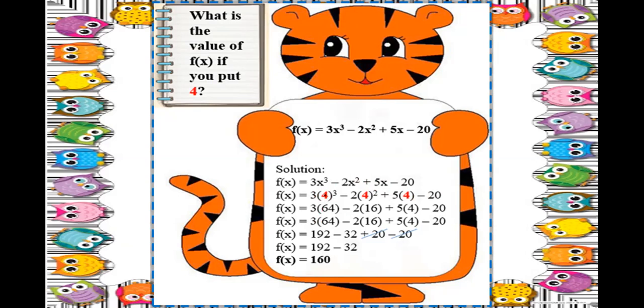You have to raise 4 to the 3rd power first: 4 times 4 times 4, three times, that is 64. Copy the 3. Then minus 2, and 4 raised to 2 means 4 times 4, which is 16. Plus 5 times 4, minus 20.